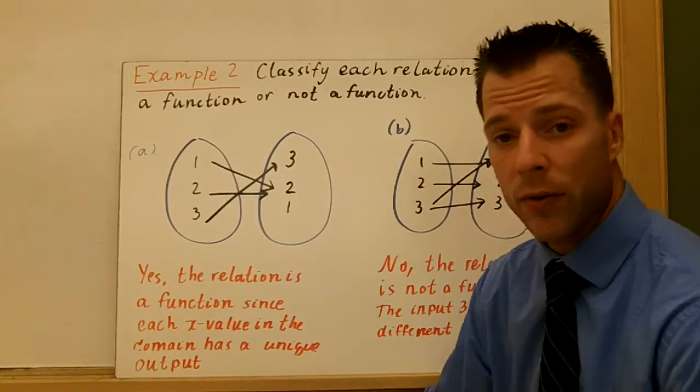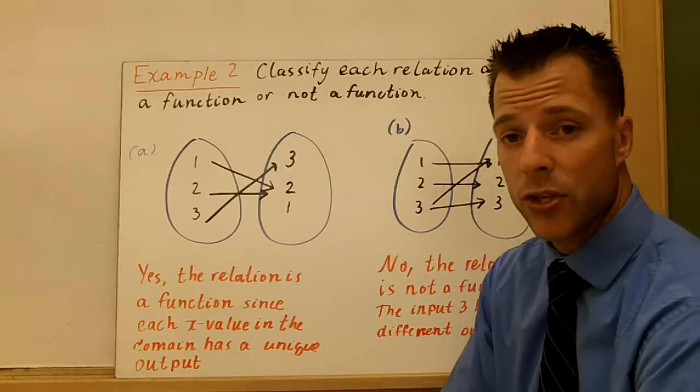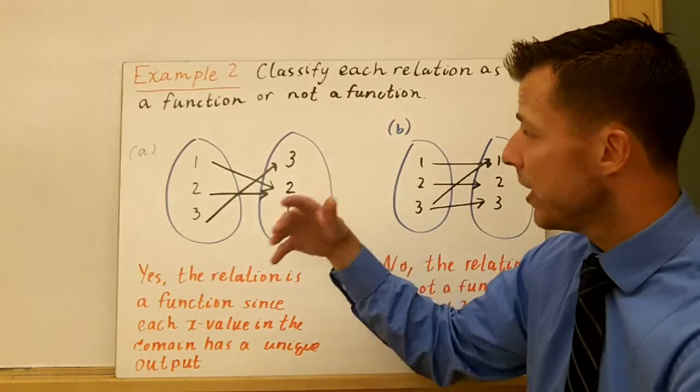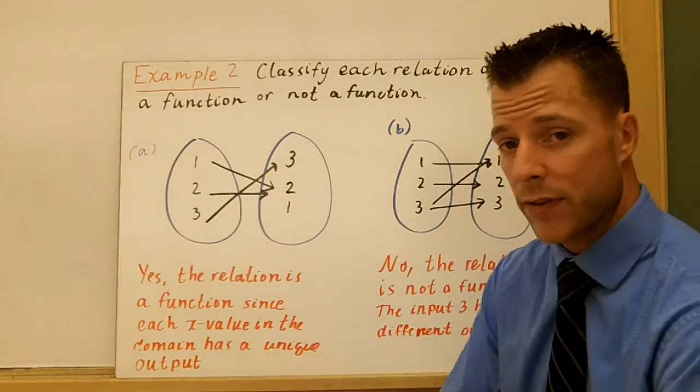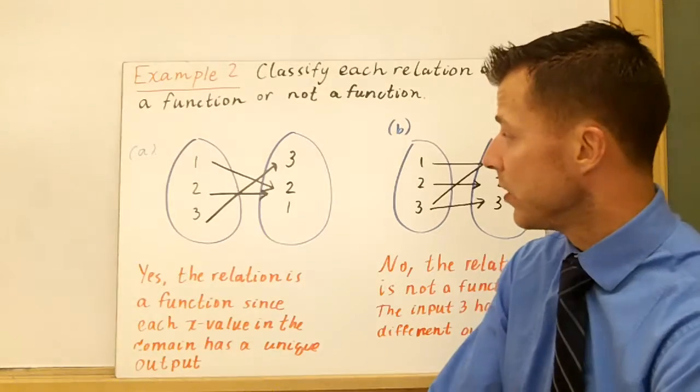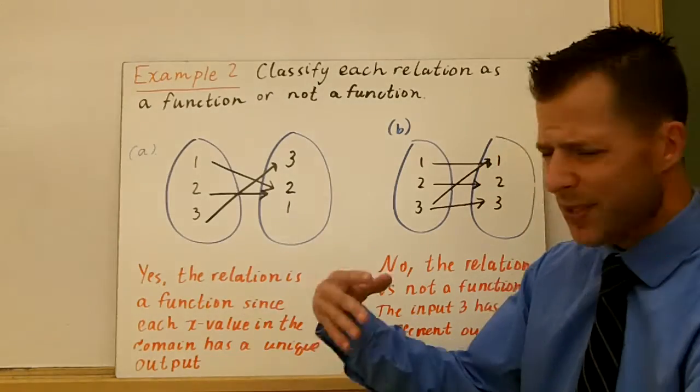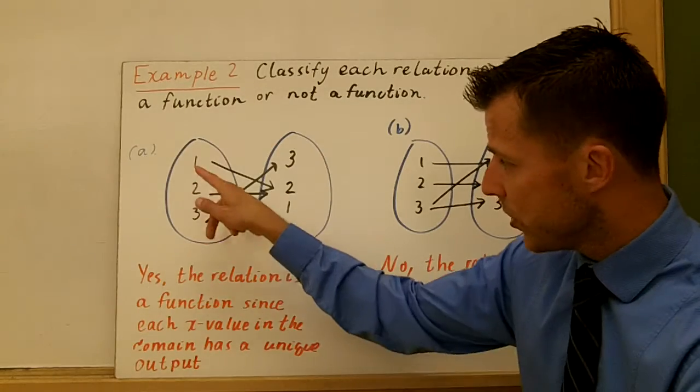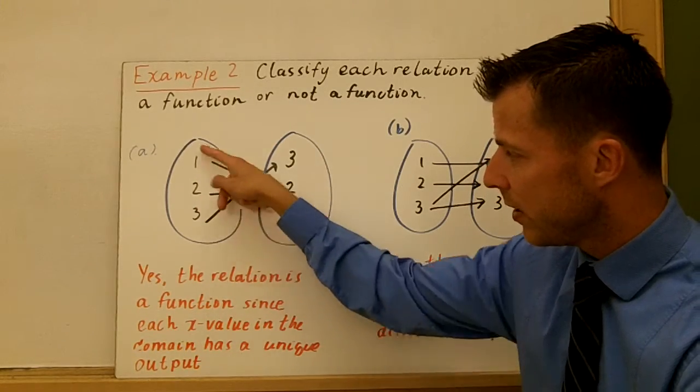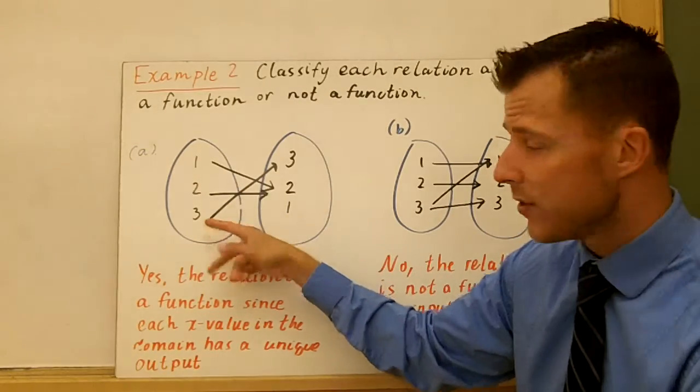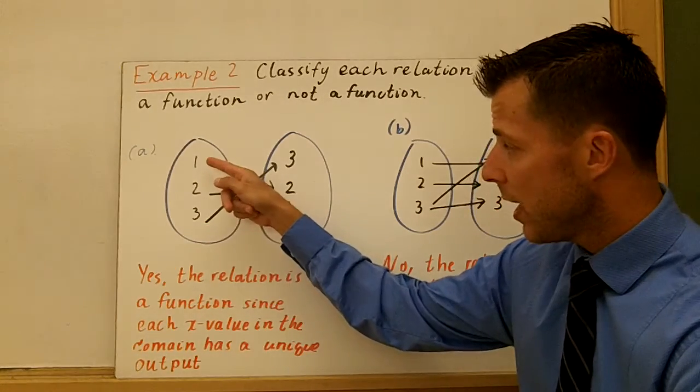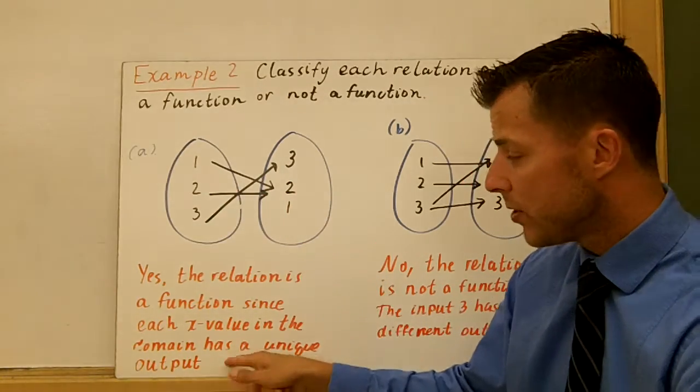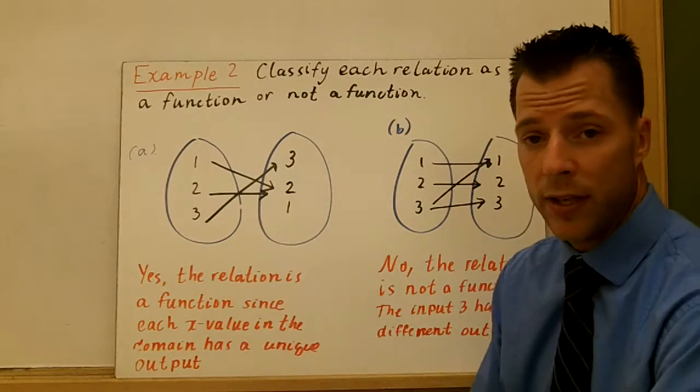So in example two now, we're going to look at a mapping diagram, two of them, and determine whether or not these relations are functions. So classify each relation as a function or not a function. And you need to be able to explain why they're not a function. So I just picked a couple of quick values here. One, two, and three. Three, two, and one. And notice there's only one arrow going from each of my input values, my x values. This is a function. Every x value is unique. It's different. And they all map to an output value. So this first relation is a function.